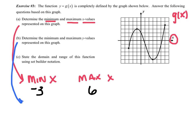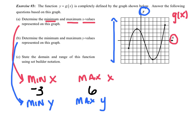Part B: determine the min y value and max y value. Instead of the x-axis, I'm looking at the y-axis — visualize going up and down. How low does this graph go? My lowest point has a y value of negative 5. And now I need my max y value — my highest point is a max y value of 4.